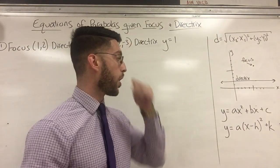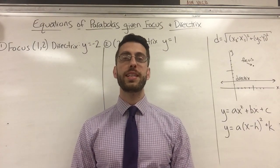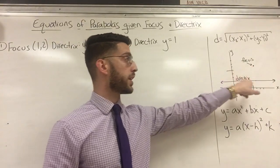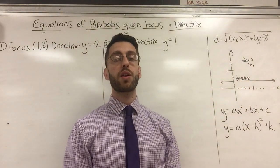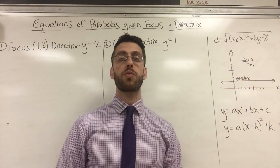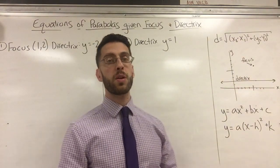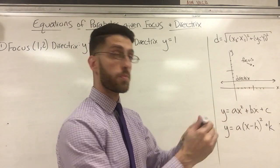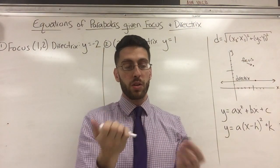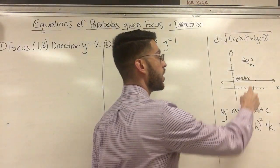The technical definition of a parabola is the set of all points that are equidistant — equal distance — from a point and a line. That point is called the focus, and the line is called the directrix. I need to find points equally apart from both. That's essentially finding the middle, so I can find the point right underneath the focus, and the midpoint of those two is the vertex.